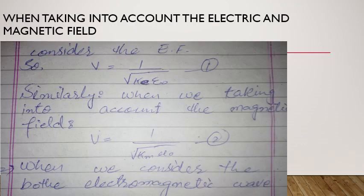Electromagnetic wave ایسی wave ہے جو medium required نہیں کرتی۔ چونکہ ہم light wave کو details سے discuss کرنا ہے، اس کا مطلب ہے ہمیں electric field کو بھی discuss کرنا پڑے گا اور magnetic field کو بھی discuss کرنا پڑے گا۔